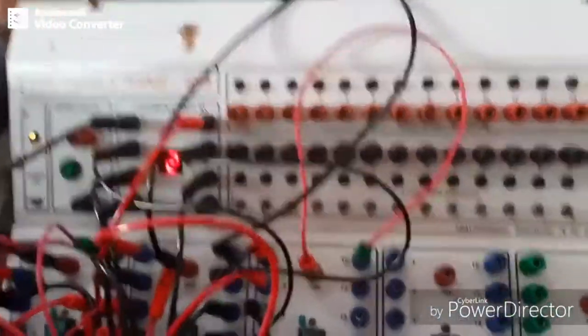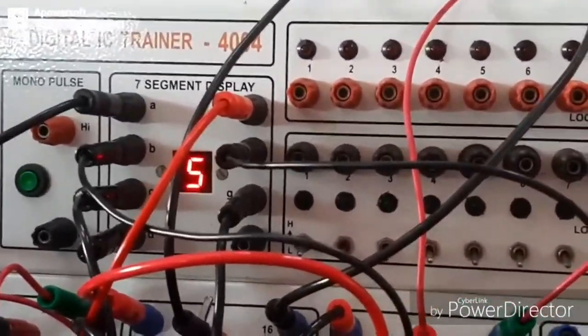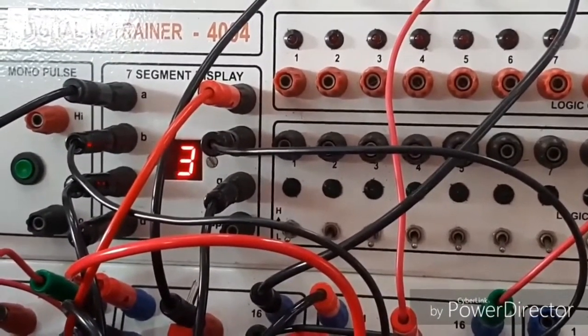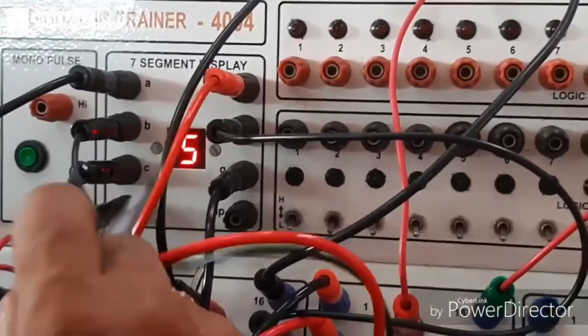So output of this one is mod 6 counter, 0 to 5: 0, 1, 2, 3, 4, 5, 0 to 5.